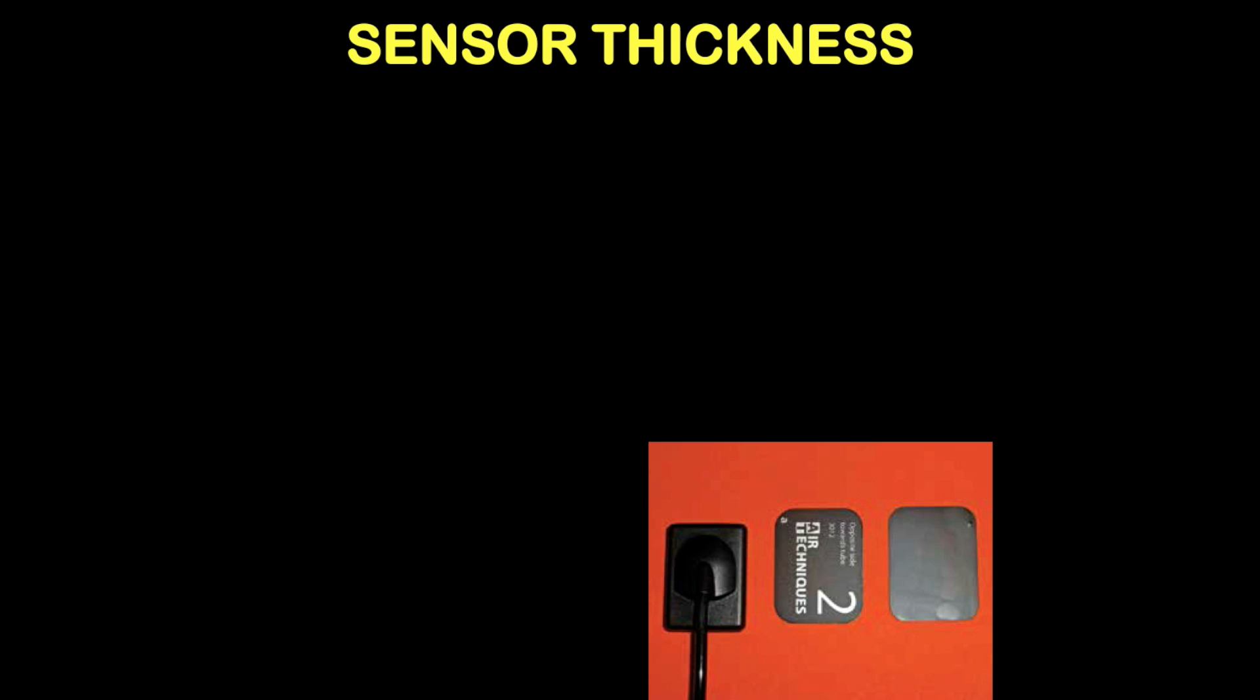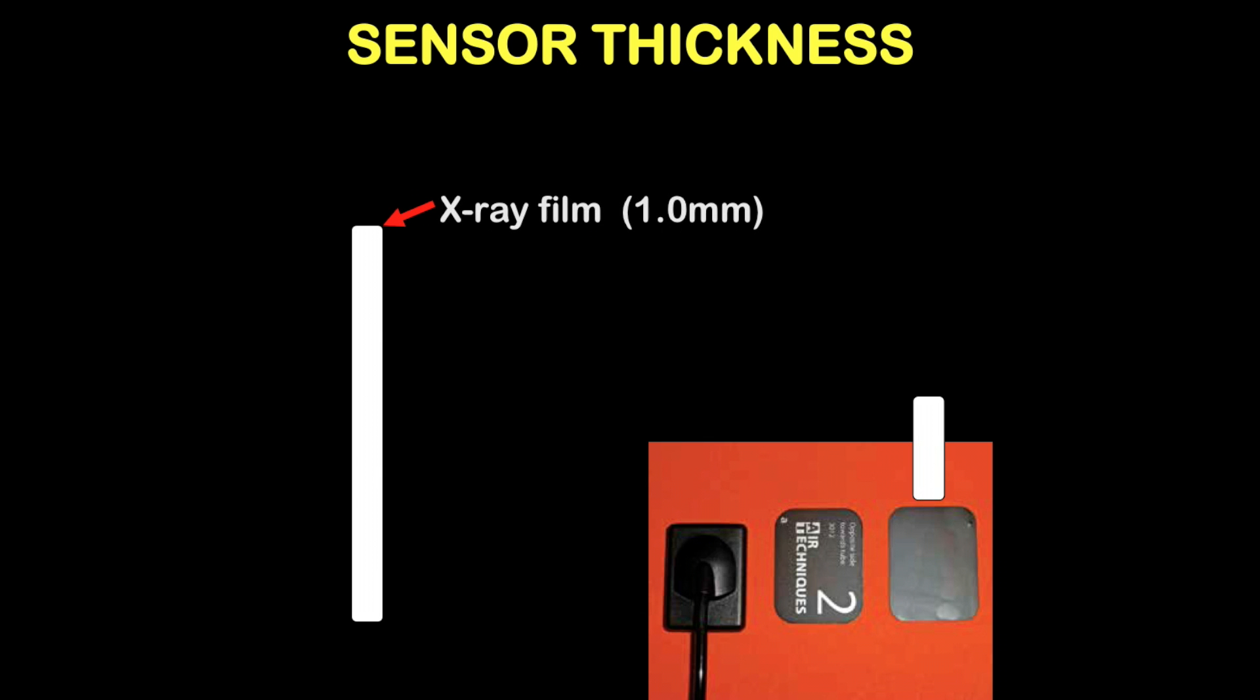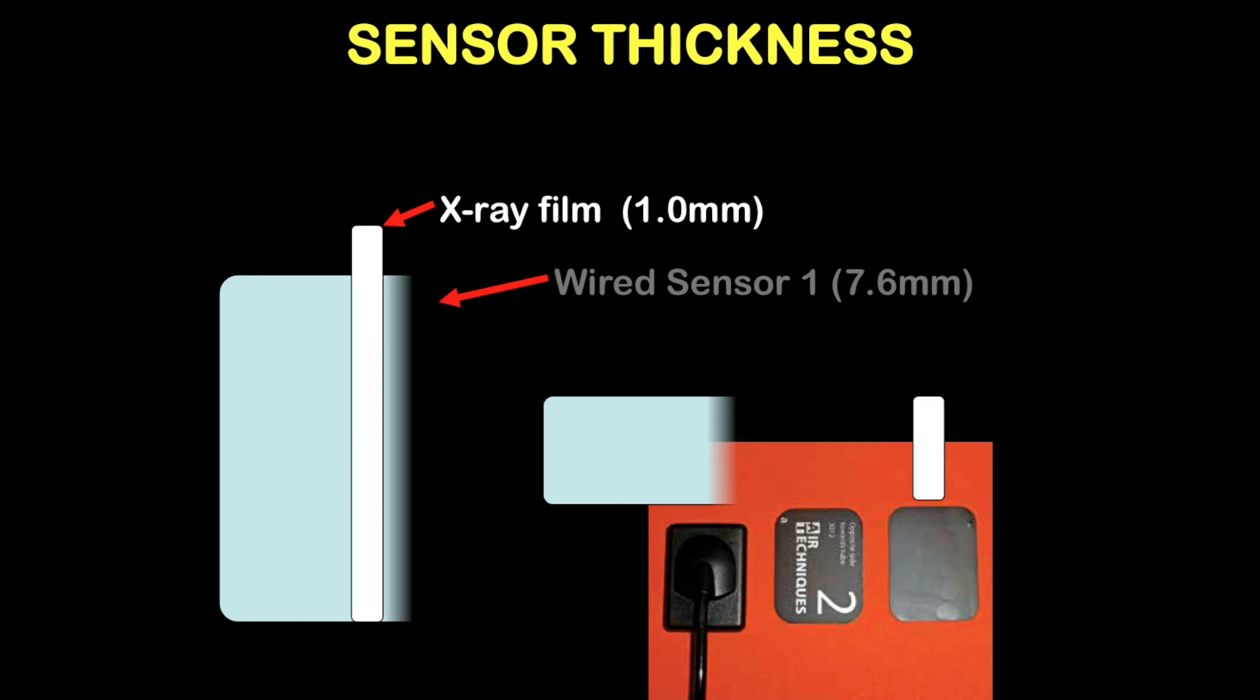The issue of sensor thickness is something that dentists and the dental team don't often worry about but is of great importance to the patient. An analog or traditional x-ray film is about 1.0 millimeters in thickness. Some of the digital sensors that are wired go from 7 to 8 millimeters or thicker.